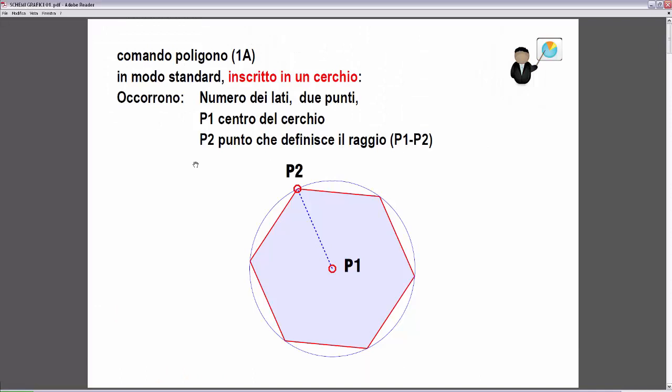Il poligono può essere costruito in modi diversi con il comando Poligono. Il primo modo, in modo standard, è quello iscritto in un cerchio. Per costruire il poligono in questa modalità abbiamo bisogno del numero dei lati — sei lati un esagono, sette lati un ettagono, otto lati un ottagono — e poi abbiamo bisogno di due punti, P1 e P2. P1 rappresenta il centro del cerchio e P2 definisce il raggio, ossia la distanza P1-P2 definisce il cerchio che circoscrive il poligono: il poligono è iscritto in questo cerchio.